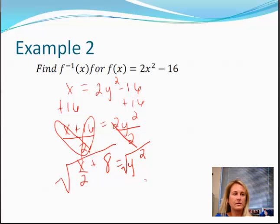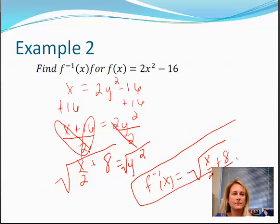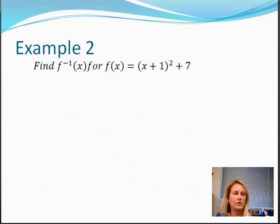So we have to take the square root of this whole side. So we have the inverse of x is equal to the square root of x divided by 2 plus 8. And that's your answer. And then you would have restrictions. You could figure out what's going to give you a negative value underneath the radical. Let's move on now.